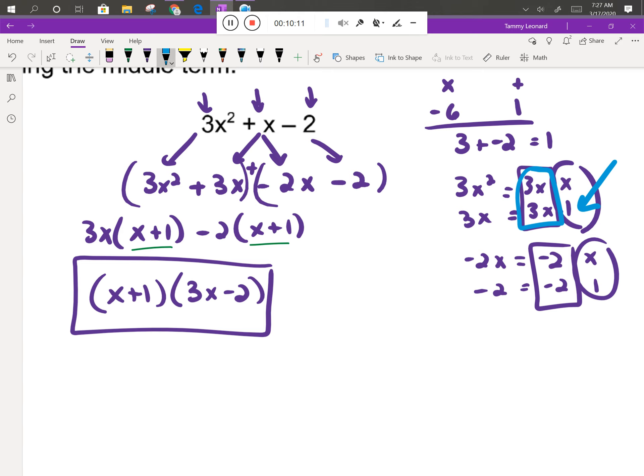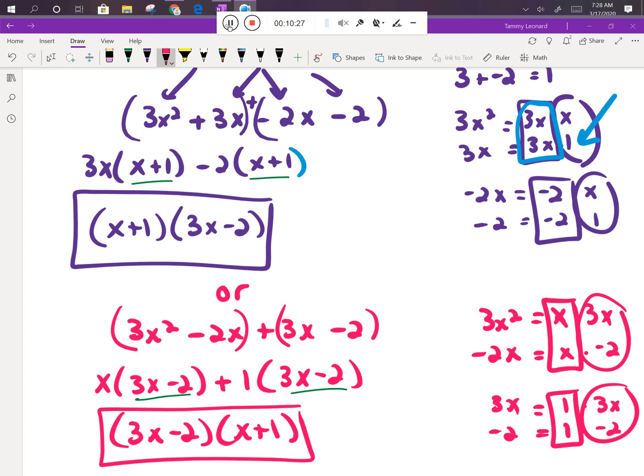I'm going to write out the work in case you happen to have reversed these two terms, because that was perfectly okay. If you wrote -2x first and 3x second, you can still get the same answer, but your work does look a little different. So let me take a minute and write that out. Notice if you write it out the other way, you get exactly the same two binomials just written in the opposite order. It's perfectly fine to have it that way. That's the same answer, because remember, we're using the commutative property. We can multiply in either direction.